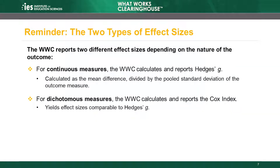As discussed in Module 3, Baseline Equivalence, the WWC reports two types of effect sizes. For continuous measures, the WWC uses Hedges G, which is the mean difference divided by the pooled standard deviation of the outcomes. The pooled standard deviation is the weighted average of each group's standard deviation. For dichotomous measures — those with only two possible categories — the WWC calculates and reports the Cox Index, which yields an effect size measure comparable to Hedges G. The formulas for these effect size measures are in the WWC Procedures Handbook, and the WWC uses the same formulas for outcome measures as it does for baseline measures.